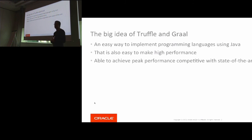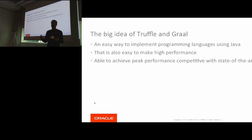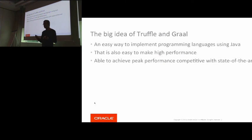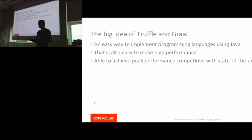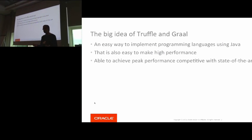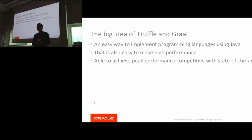So what's the big idea behind Truffle and Graal? The big idea is that we are building an infrastructure which will make it easier for people to build all sorts of different languages on top of it, which is built in Java. The big selling point is that with our framework, you should be able to write languages fairly fast, but they should also perform fairly well. The current language implementations are competitive with or better than the best implementations out there, with significantly lower effort.